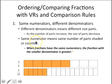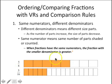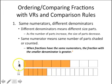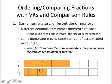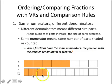The same numerator means the same number of parts are shaded or counted — five in both fractions, and in both we've got five shaded parts. But the sixteenths are smaller parts than the eighths. So when fractions have the same numerator, the fraction with the smaller denominator is greater, and we can see that illustrated with our visual representations.